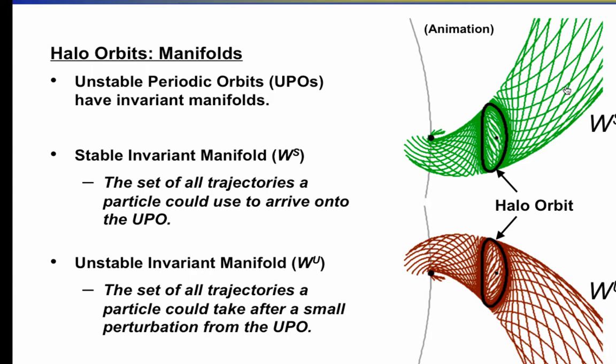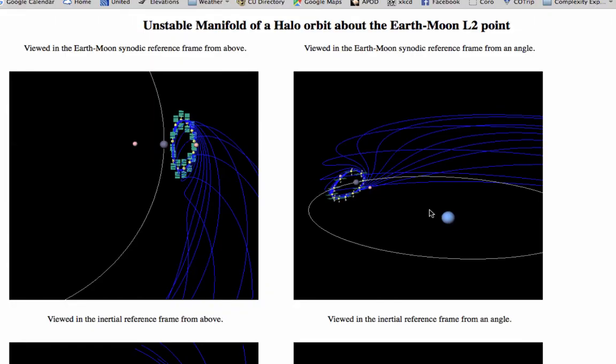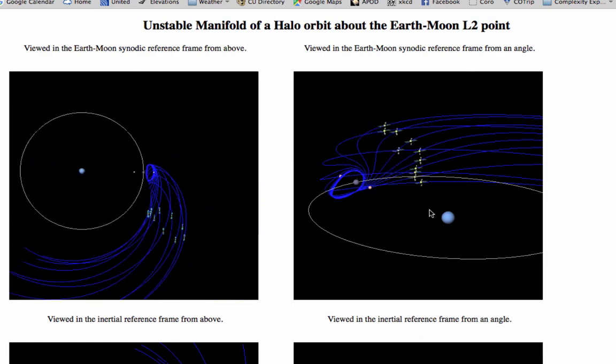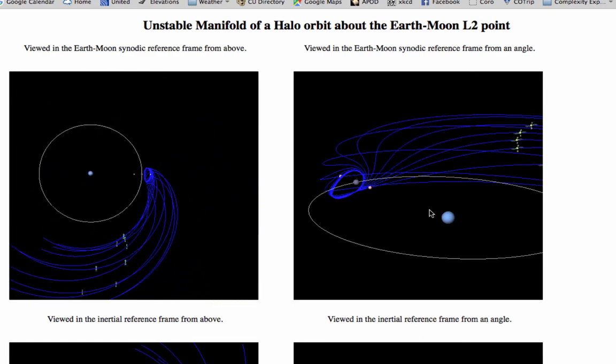And then the green trajectories are trajectories that you can take to get onto the orbit. They're stable. They're trajectories in the stable manifold. And then the red trajectories down here are trajectories that you would take if you were perturbed off of the orbit. So I placed 10 satellites in this halo orbit and perturbed them all just a little bit and let them all fall off of that orbit. And you can see they each take a different trajectory off of the orbit. And we'll watch it again.